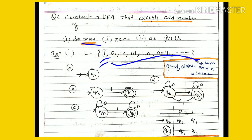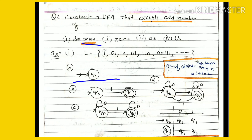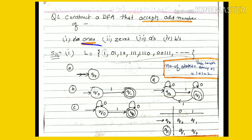Initially we create Q0 as the initial state, indicated by an arrow. We give input '1' from Q0 and move to Q1. Q1 has a double circle because a single '1' should be accepted by the DFA — a single '1' means an odd number of 1s. So we have the transition from Q0 on input '1' going to Q1, and Q1 is a double-circle final state.